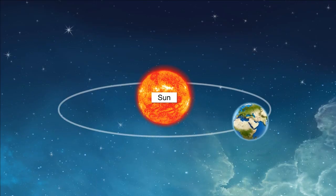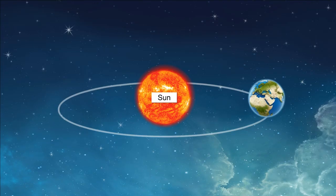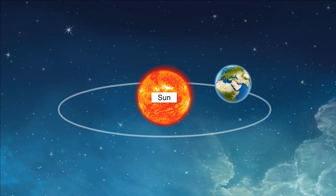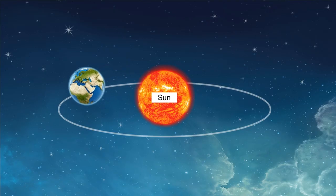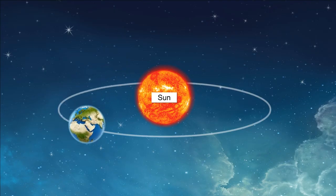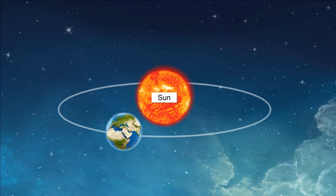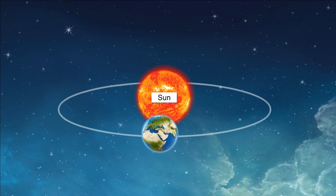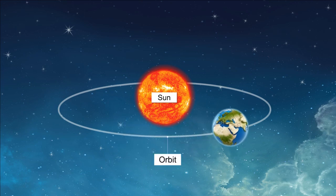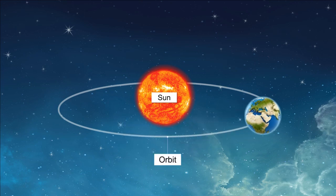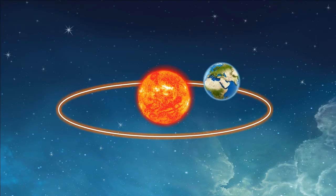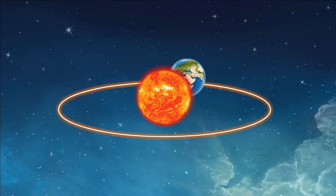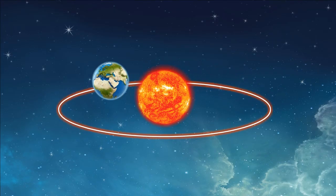Let's see what is meant by revolution. When a planet or a moon revolves around an object, it is called revolution. The imaginary path around which an object moves is called its orbit. This means that the earth revolves around the sun in its orbit.